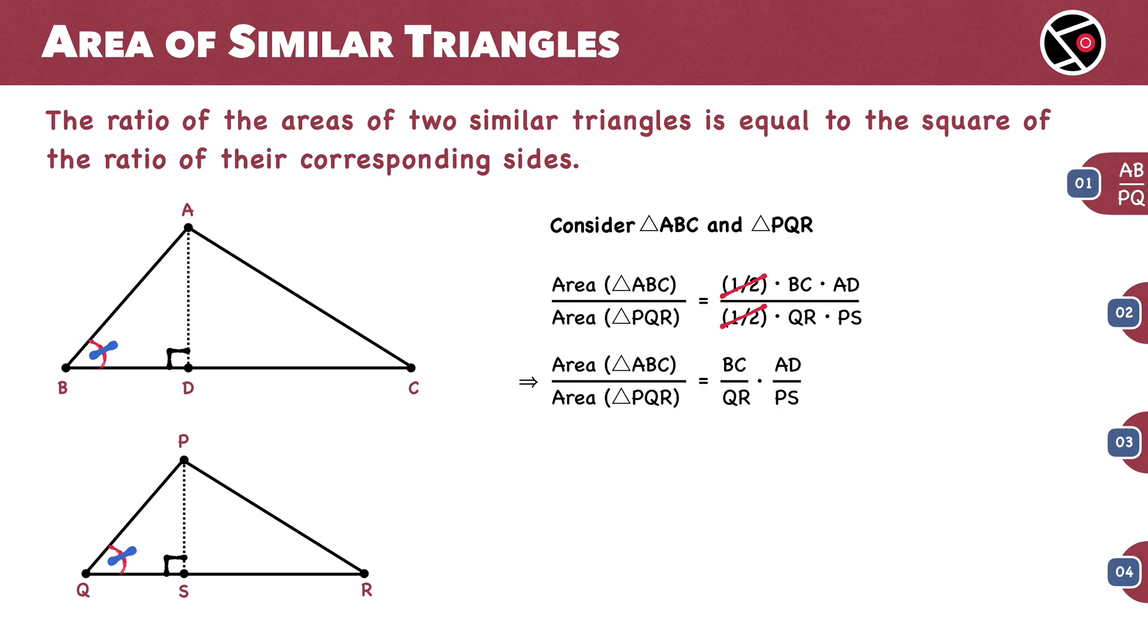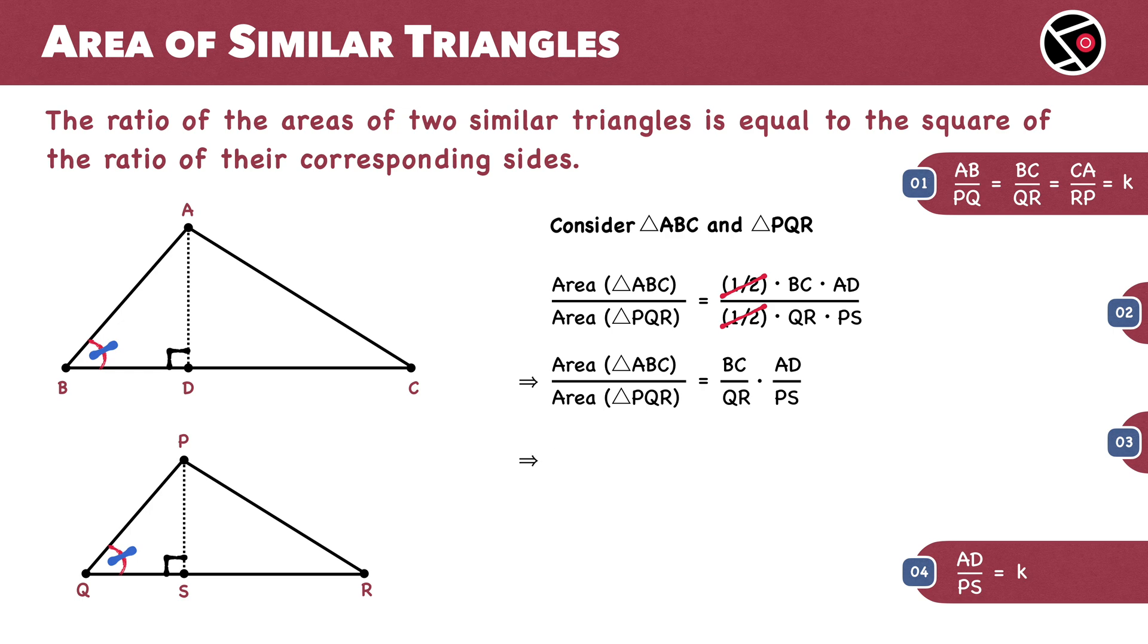From equation 1, BC by QR is K, and from equation 4, AD by PS is also K. So we have K times K.